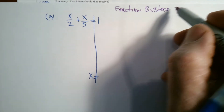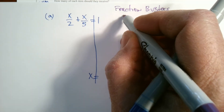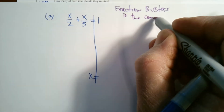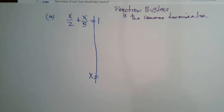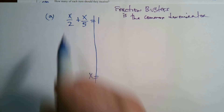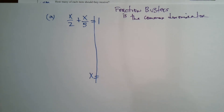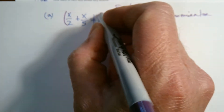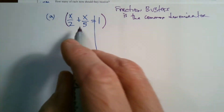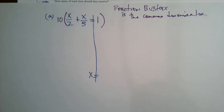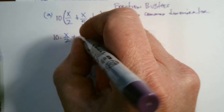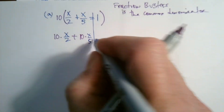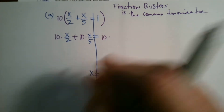Fraction Busters — what they are is you look for the common denominator. The fraction buster is the common denominator. So what is the common denominator when I look at these two fractions? I've got a denominator of 2 and a denominator of 5, so my common denominator is 10. I'm taking this entire equation, every term in the equation, and multiplying it by 10. So that's going to be 10 times X over 2, plus 10 times X over 5, equals 10 times 1.